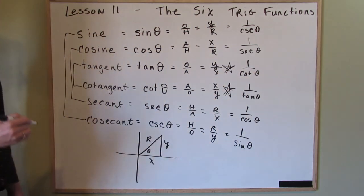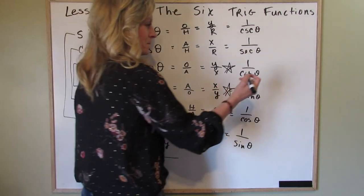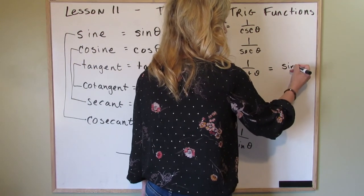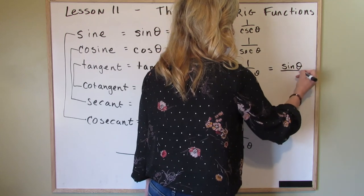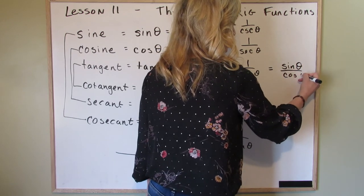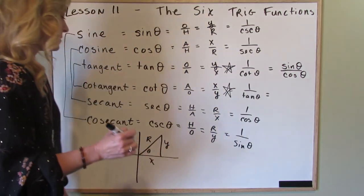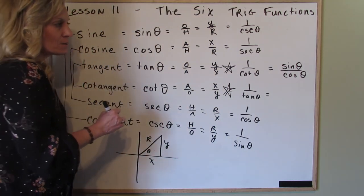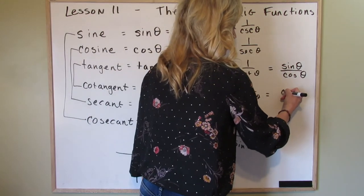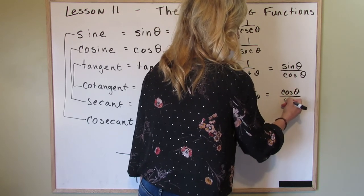Two special things here: the tangent — as mentioned two lessons ago — is also the sine over the cosine. That means the cotangent must also be the cosine over the sine.